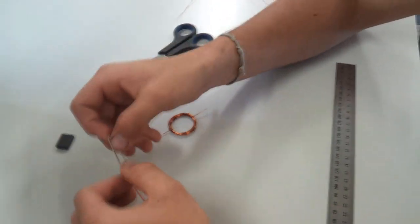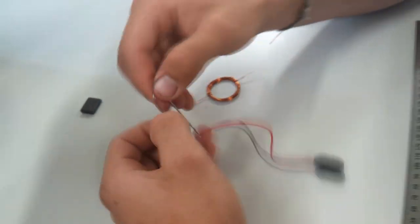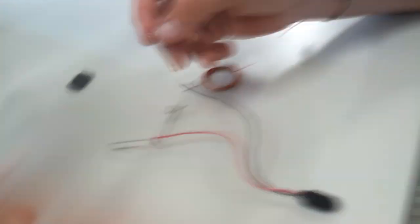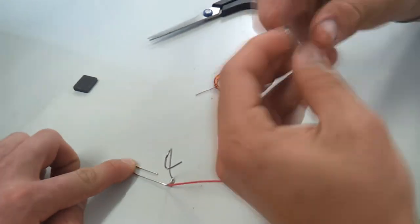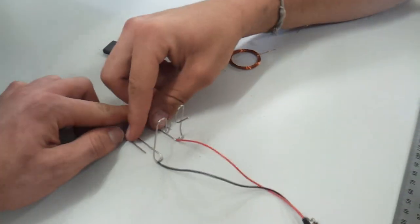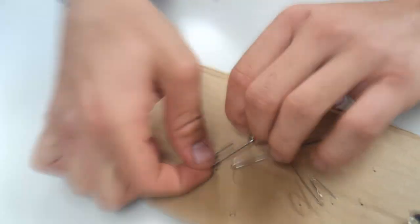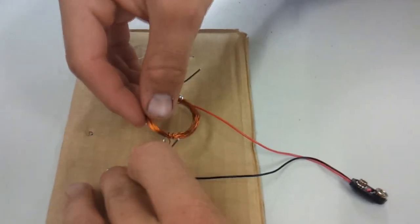Bend the paper clips into hooks as shown. Attach the paper clips to the cardboard block. Place the coil onto the hooks in the paper clip post.